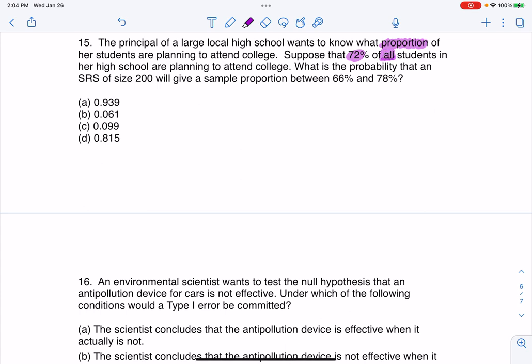So they have the parameter. It says, what is the probability that an SRS of size 200 will give a sample proportion between 66 and 78%? Taking a look at this, there's a couple things I can notice. I have proportions I'm dealing with, but I also have this sample here, and they're talking about a probability. So I'm looking at a sampling distribution for proportions.